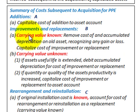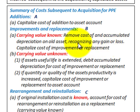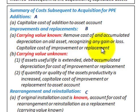For the accounting treatment of improvements and replacements: in the first case, where the carrying value is known, you remove the cost and the accumulated depreciation of the old asset from your books and recognize any gain or loss at that time. Then you capitalize the cost of the improvement or the replacement.